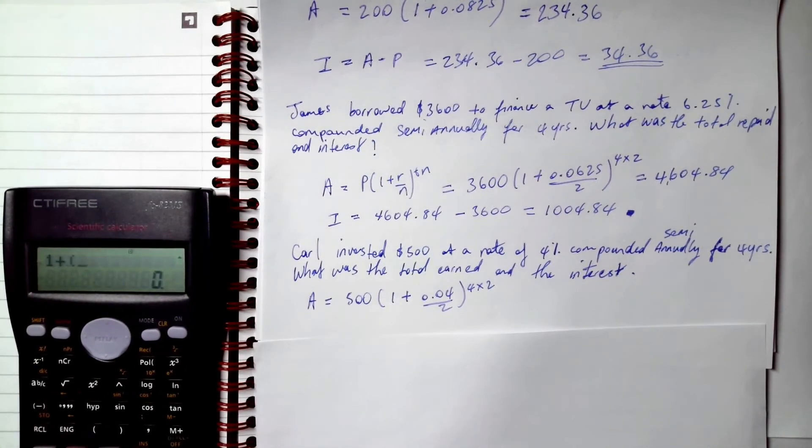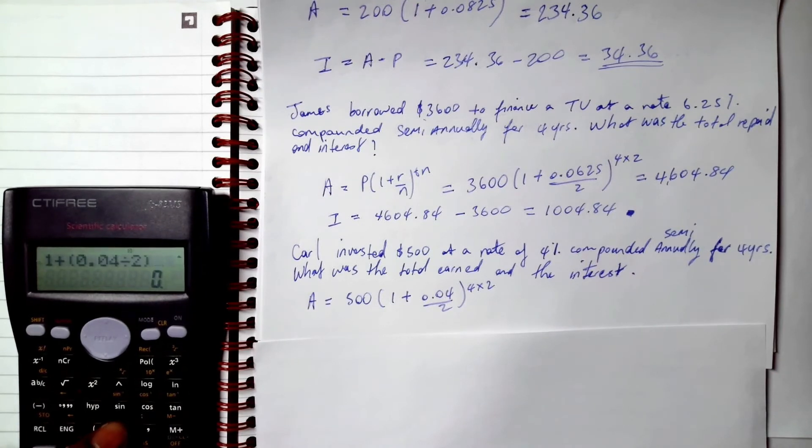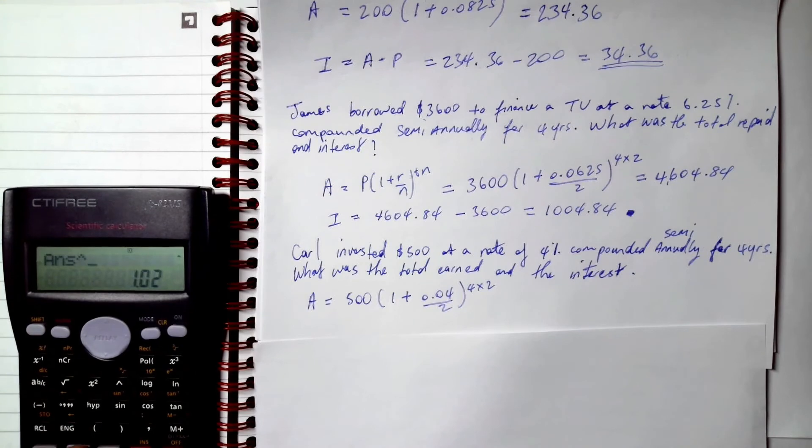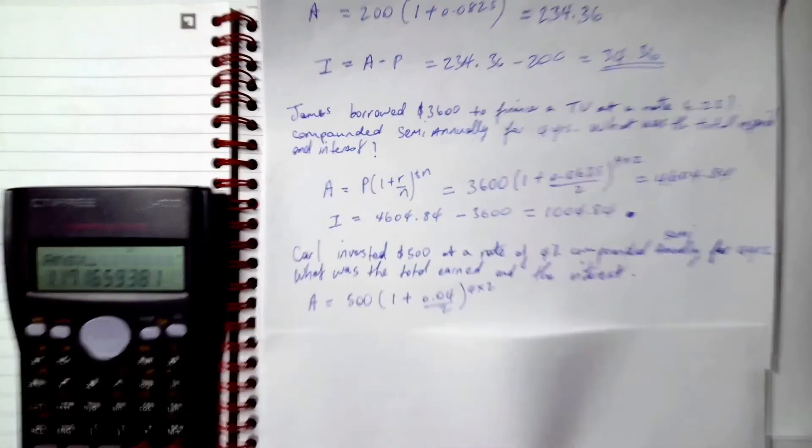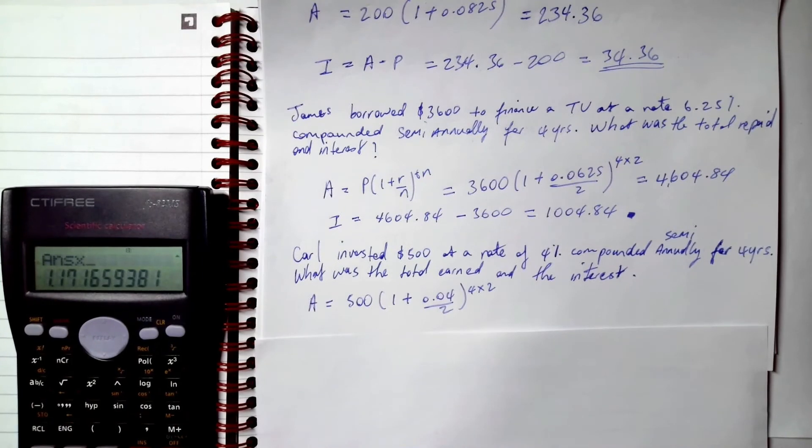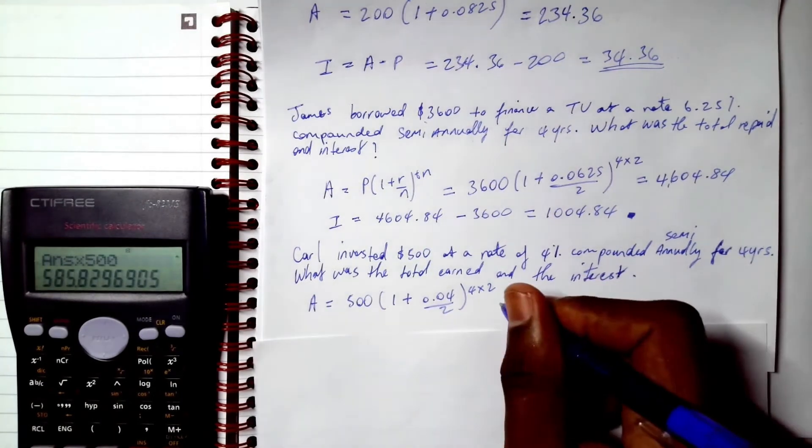1 plus 0.04 divided by 2, we have to know how to use our brackets all right, raised to the power of 8, times 500.